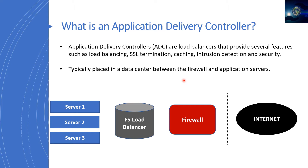An important thing to know is that the application delivery controller is a device that works from Layer 4 up to Layer 7. It starts at Layer 4, which is the TCP/IP layer, and goes up to Layer 7, which is the application layer. This allows it to do a lot of powerful things that other devices like routers or switches may not be able to do, because they don't work on those layers.